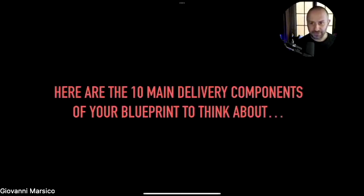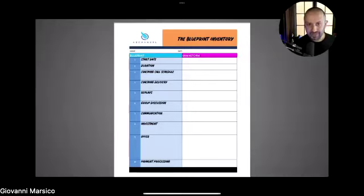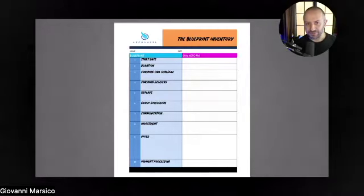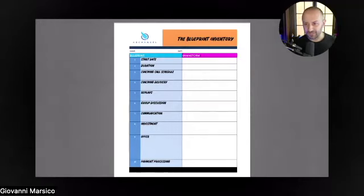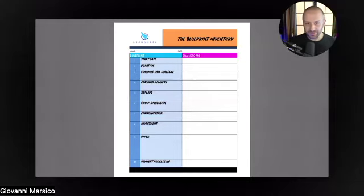There are 10 main delivery components of your blueprint and we'll go through all of them today. One of them we'll go into even bigger detail next time. After today you'll get a copy of the blueprint inventory where you can start brainstorming each of the 10 items, and you'll also get access to the replay.